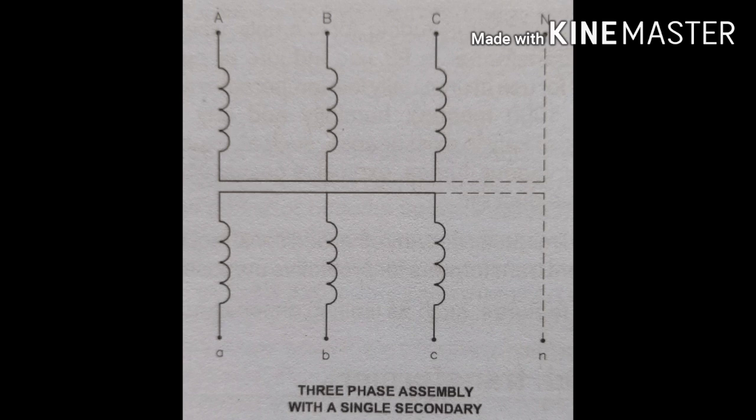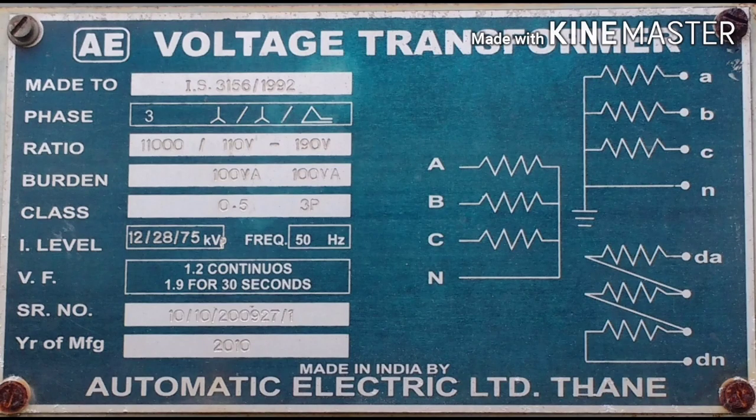This is a 3-phase VT with a single primary and single secondary. In a 3-phase system, the terminals are labeled ABC in capital letters for the primary and ABC in small letters for the secondary. This is the naming convention for the Voltage Transformer.